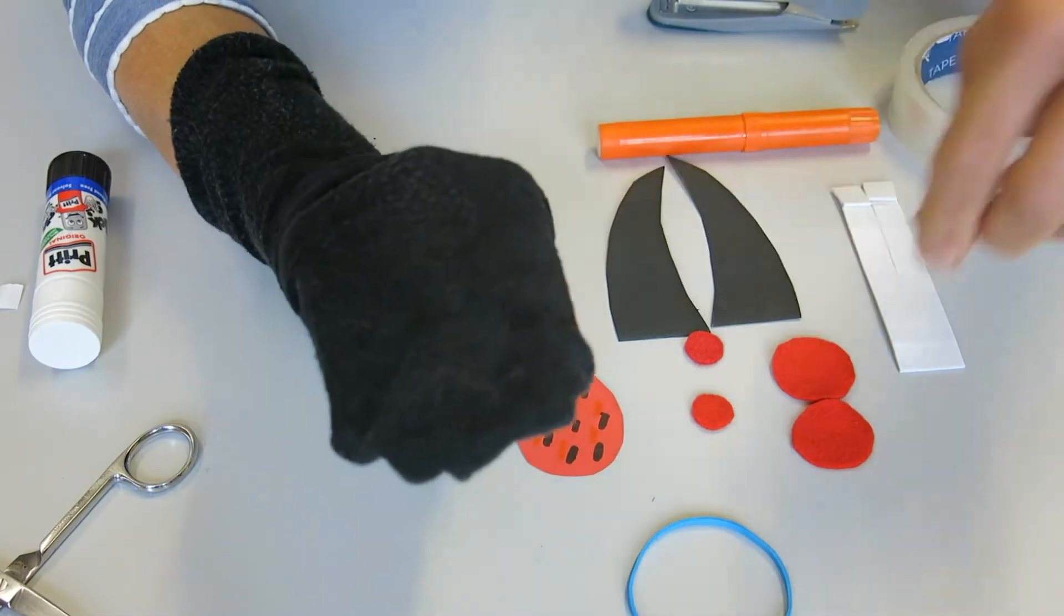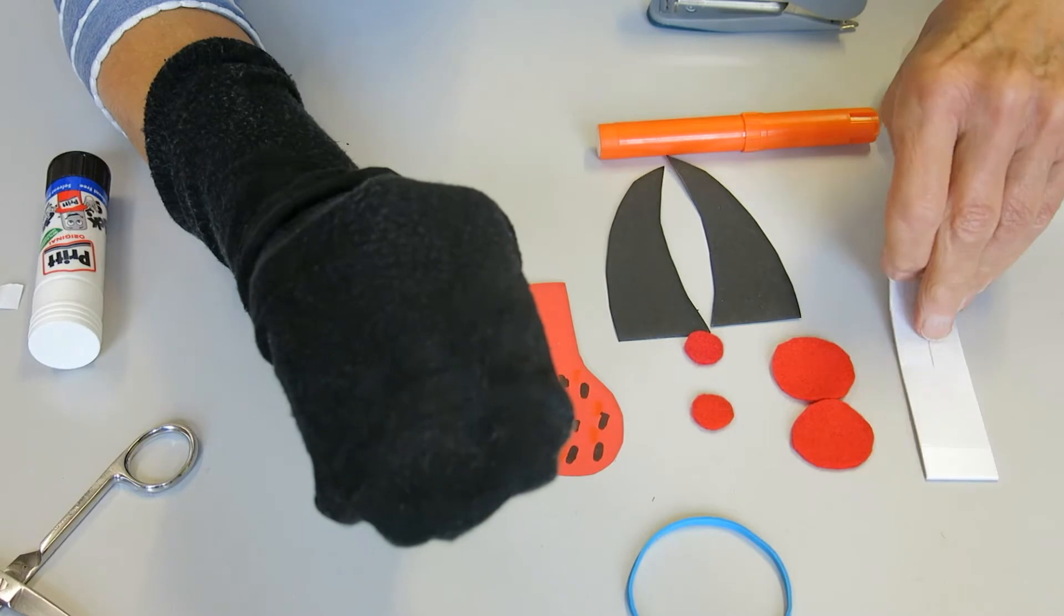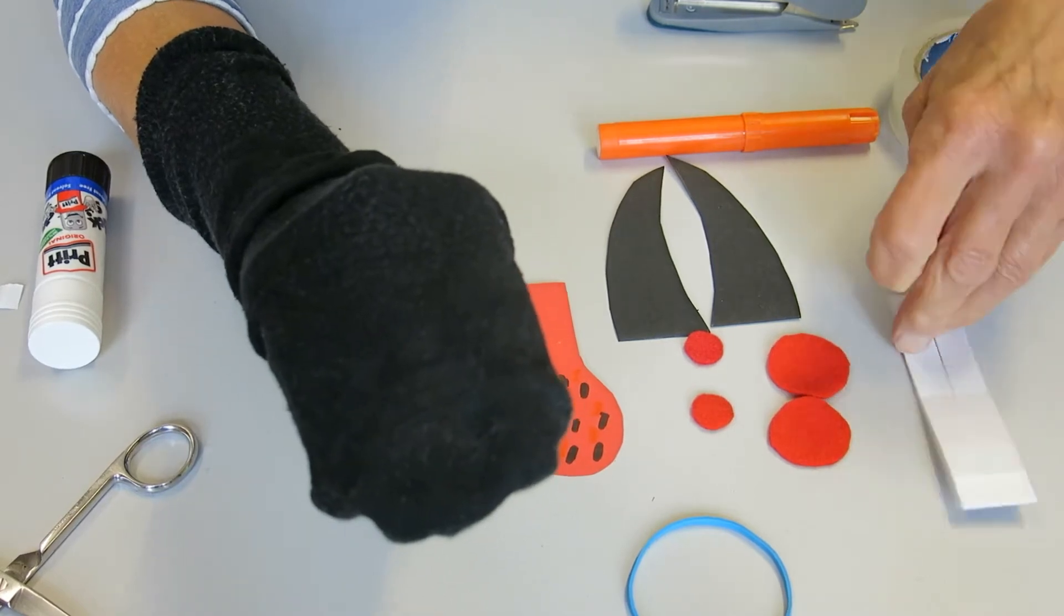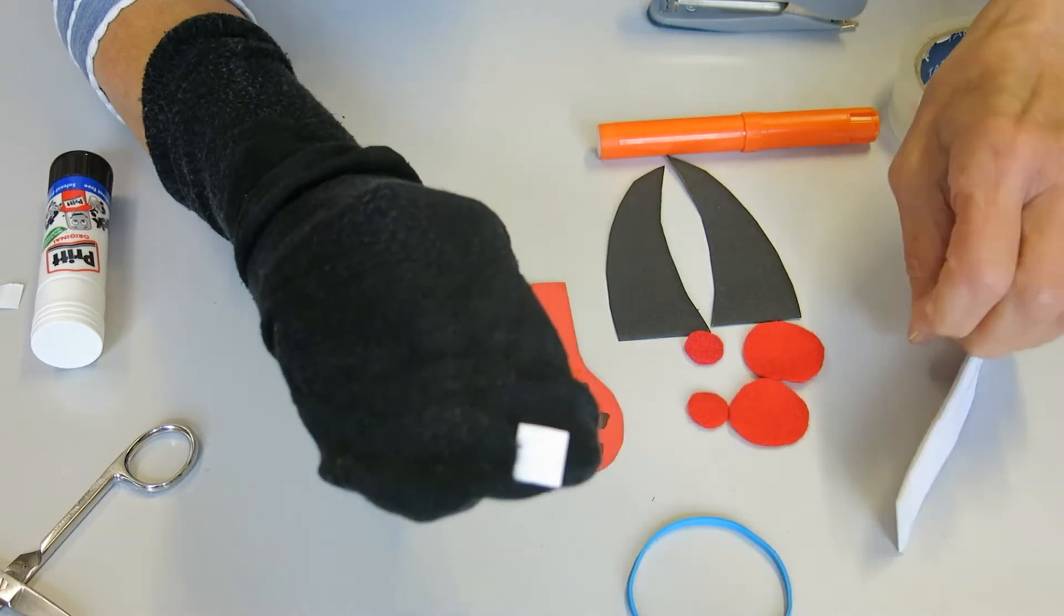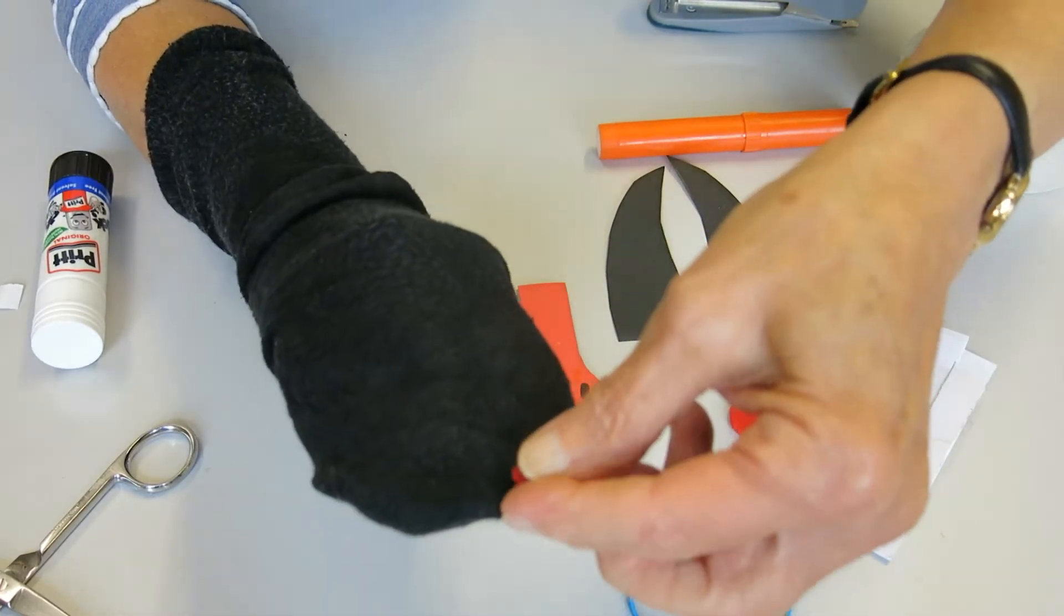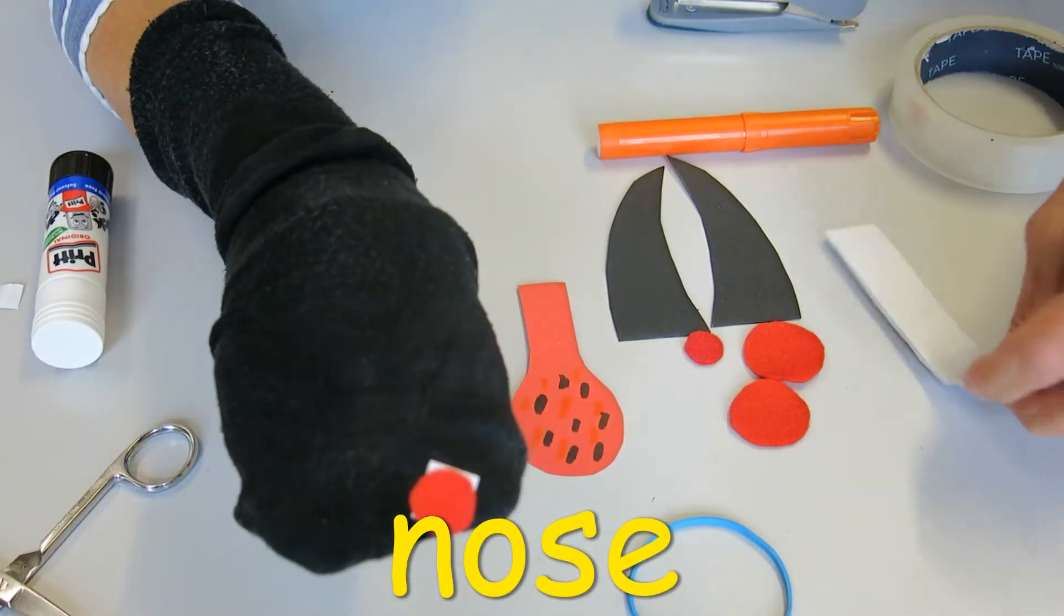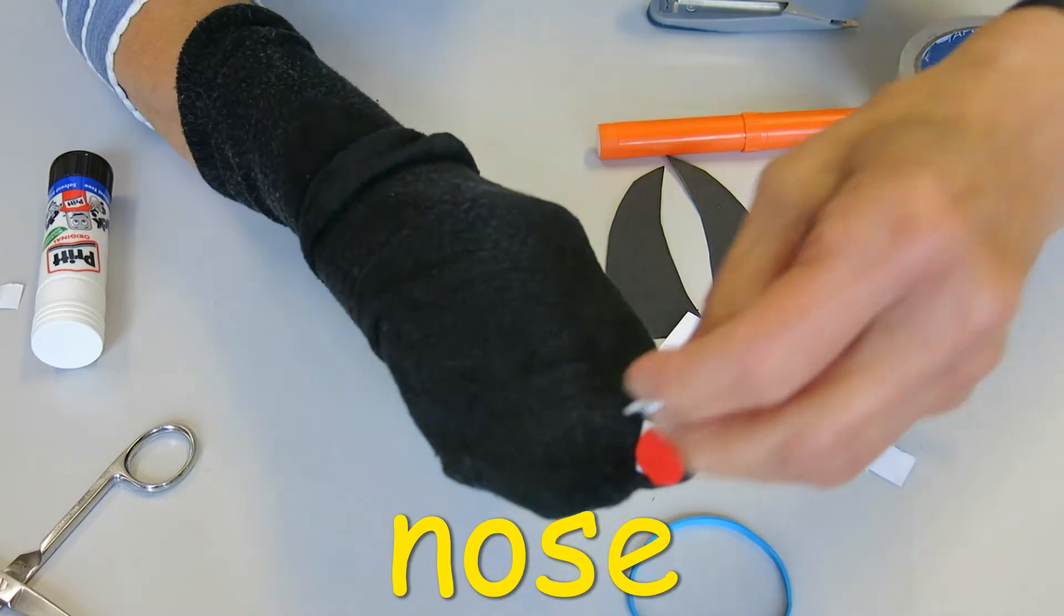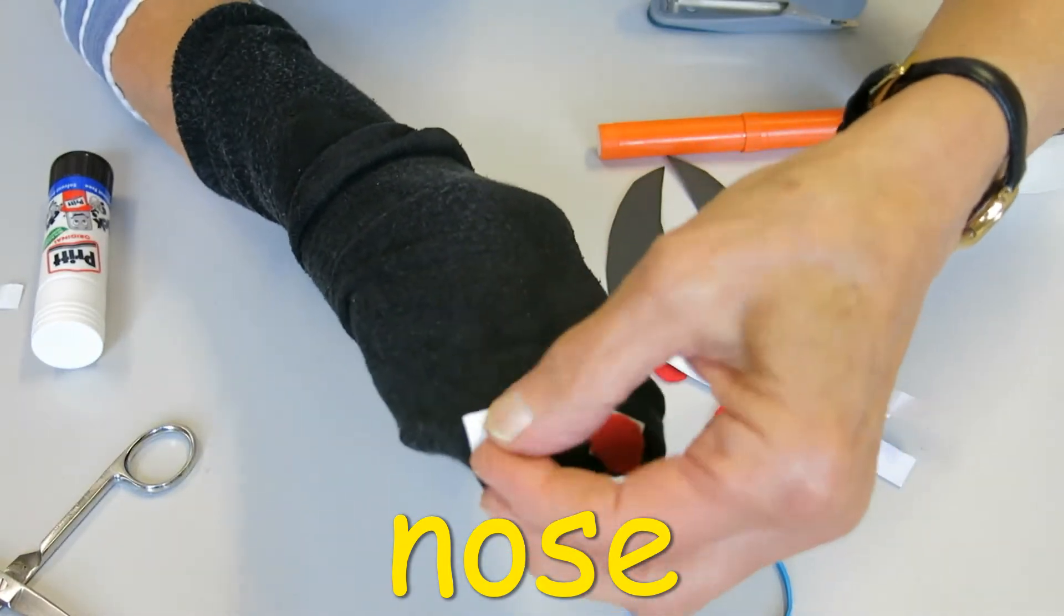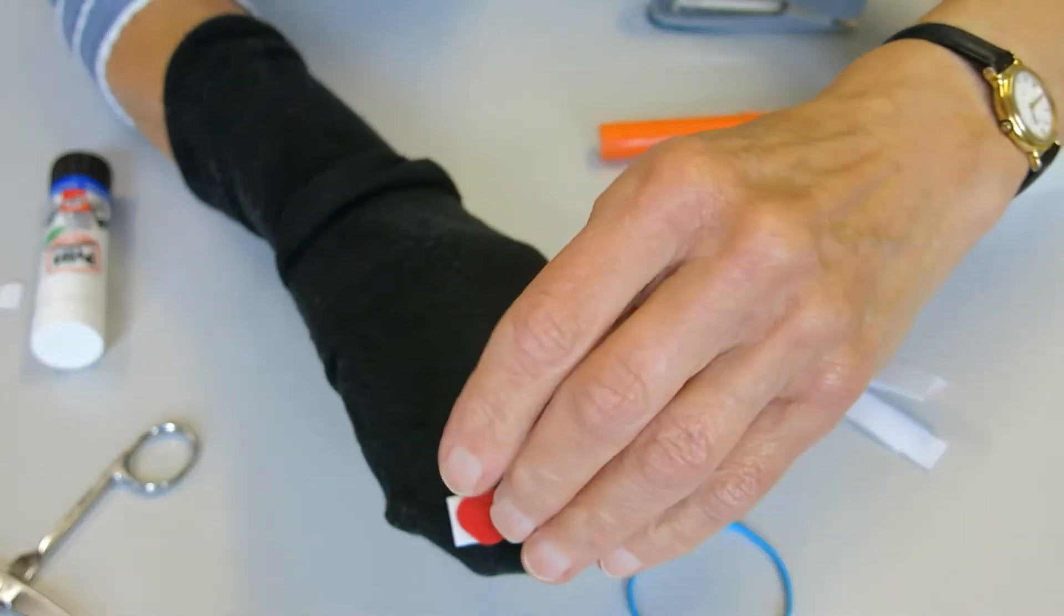The next thing to do is to fix on his nose. Now double-sided tape or little sticky pads are best for this. So you need to put a sticky pad on and that's one part of his nose and then another sticky pad and that's the other part of his nose.